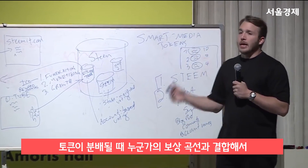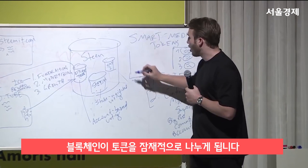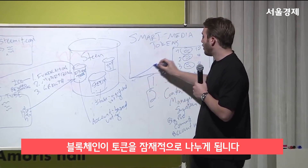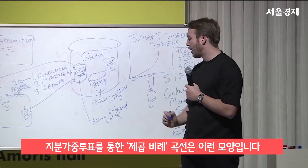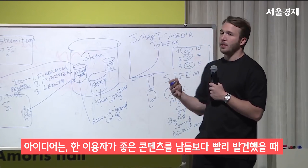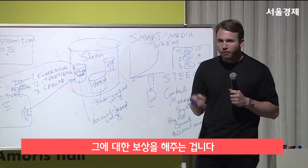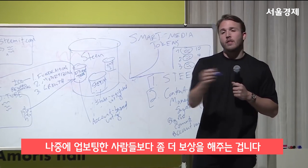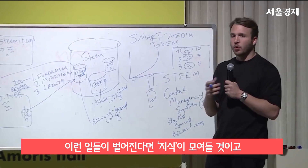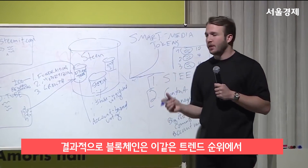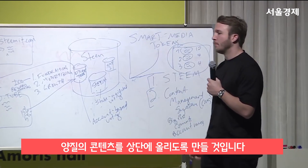And that, in combination with some of the rewards curves — so when tokens are being distributed, the blockchain is potentially distributing them on either a super-linear or a linear rewards curve. With a super-linear curve in combination with account-based voting, the idea is that the earlier a given person finds a piece of high-quality content and upvotes it, the more they'll be rewarded for upvoting it earlier than all the others who end up upvoting it. And if that's happening, there's a wisdom of the crowd being manifested in the blockchain that helps the highest quality content rise to the top of the system, as defined by the cryptocurrency.